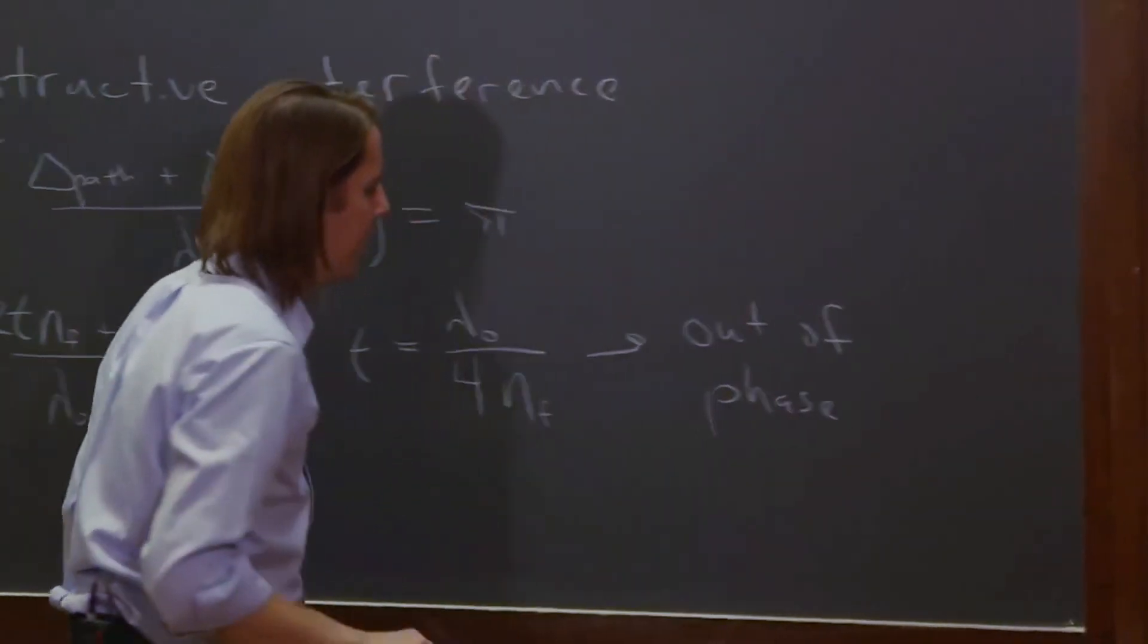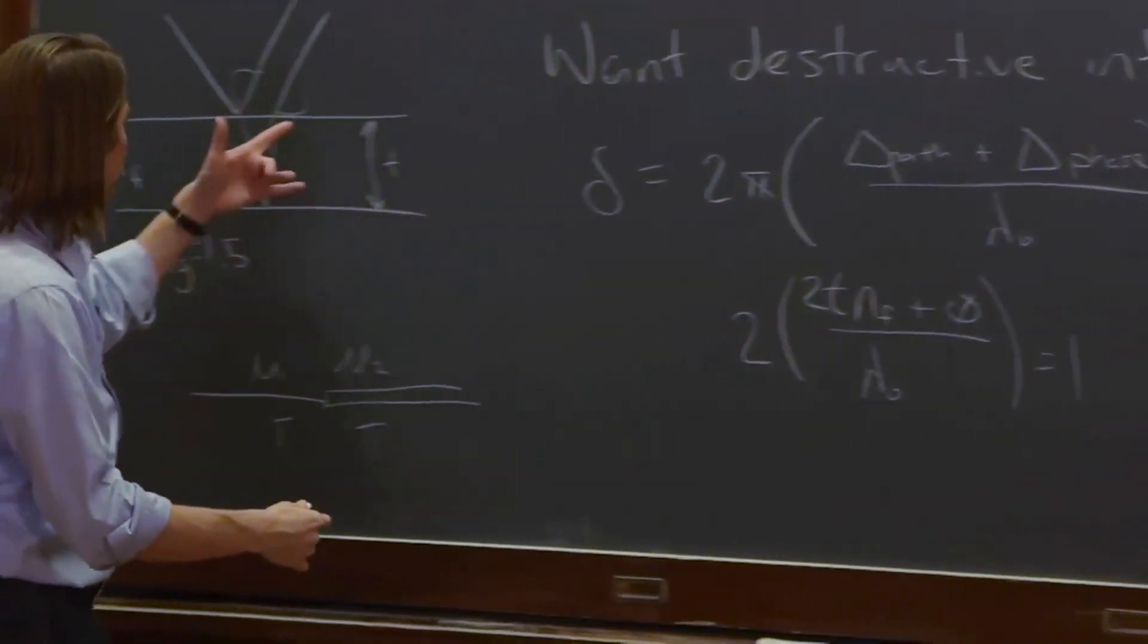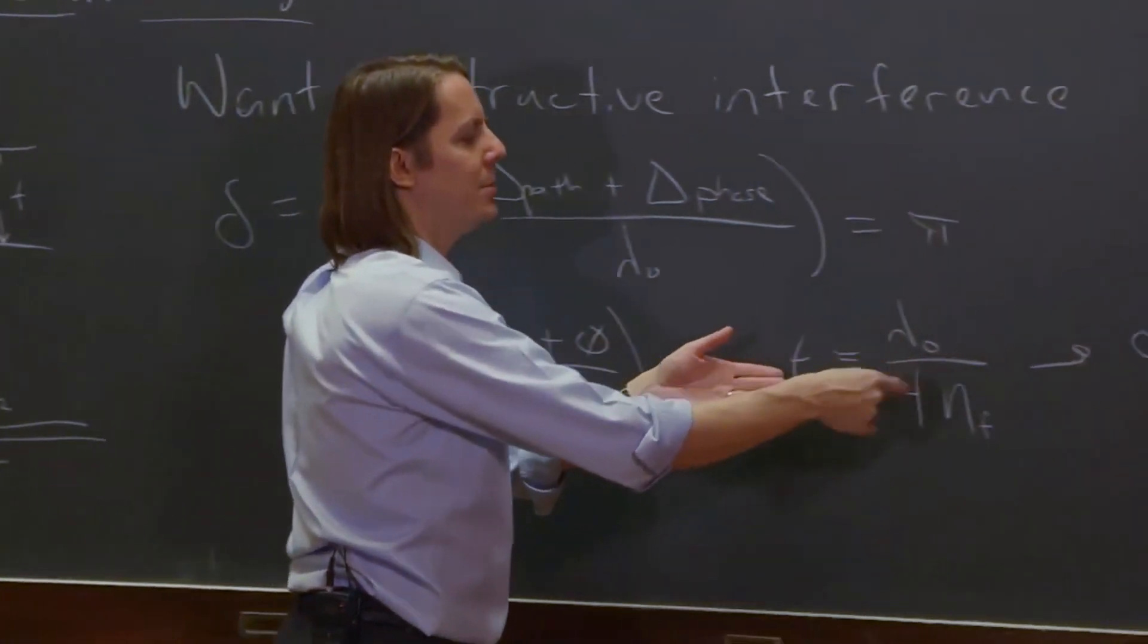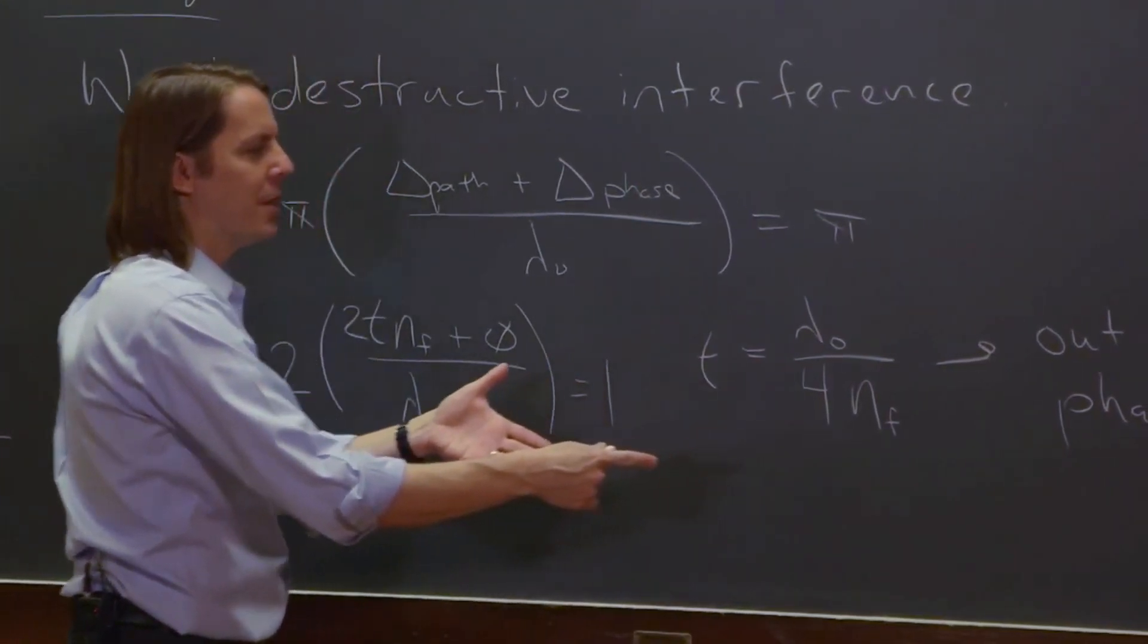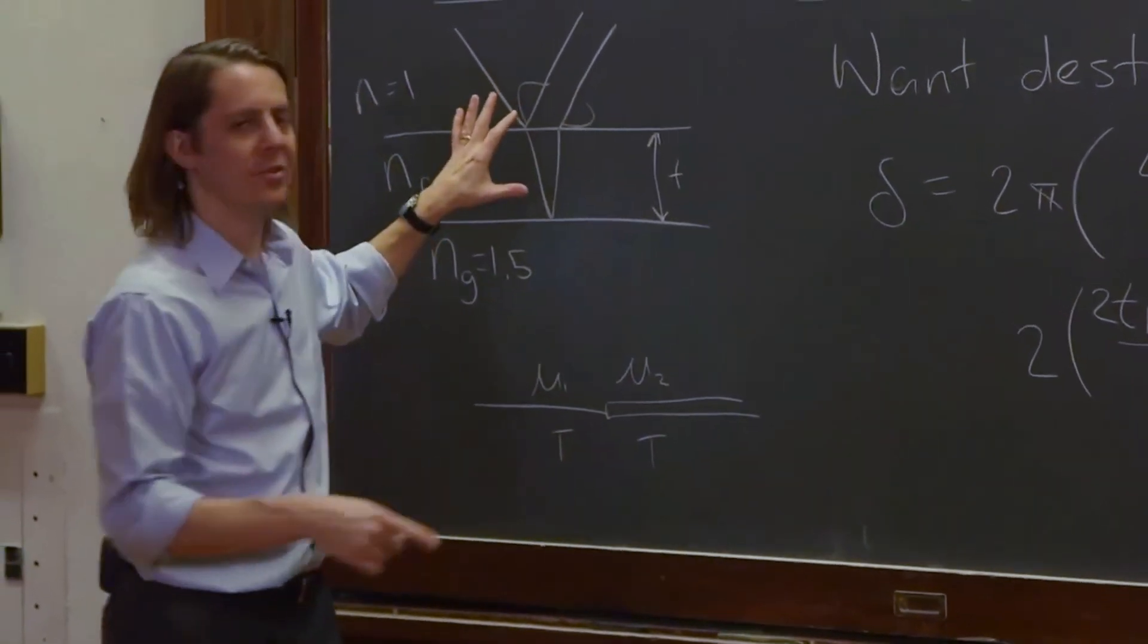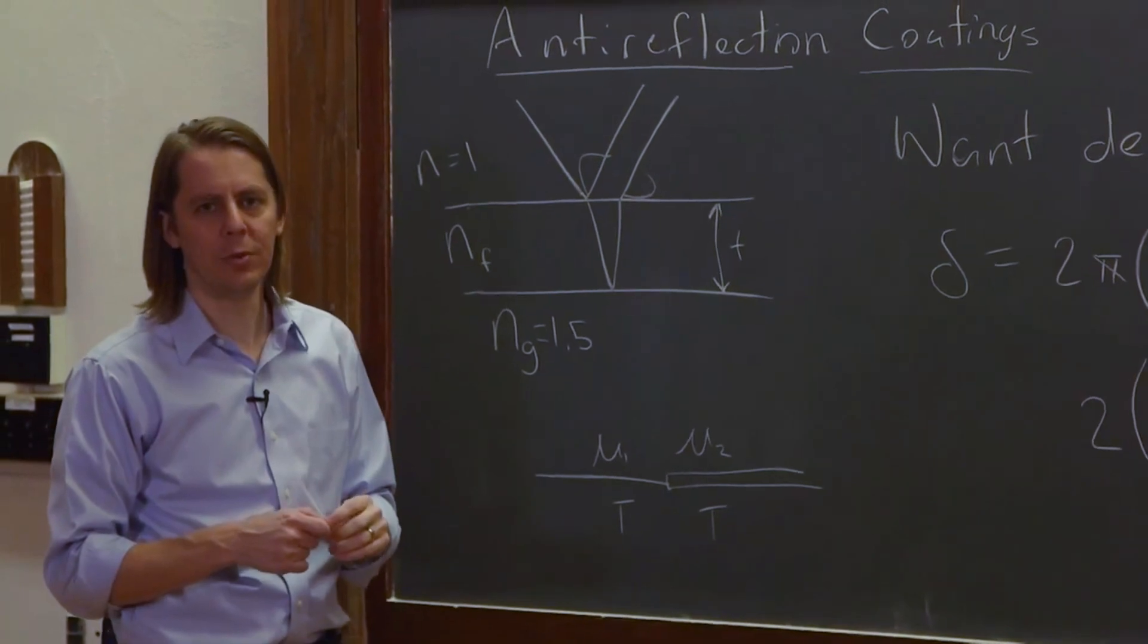But that doesn't really let you design any reflection coating yet, because the two properties you need for the coating, the thickness and the index of the film, are both in this equation. So this gives you some relationship between them, but it doesn't solve for them. But the good news is, we still have one more thing to do. We have to have the amplitudes be the same. So we put them out of phase, but now we can see what condition we'll get the amplitudes equal.